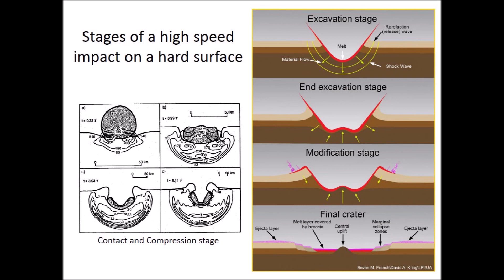Target material is displaced, forming an ejecta curtain that covers the terrain surrounding the final crater. During the modification stage, loose debris slides down the steep interior walls of the crater and the rebound of the target surface may form a central peak. On a much longer time scale, isostatic rebound may eventually flatten the crater.